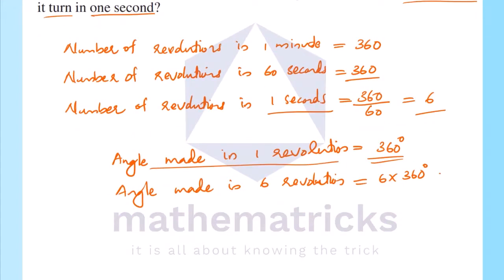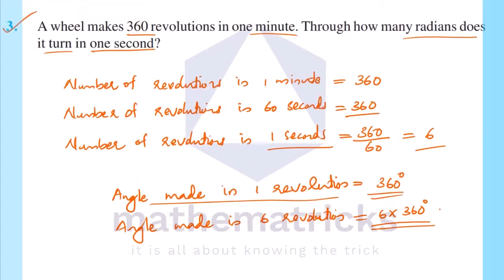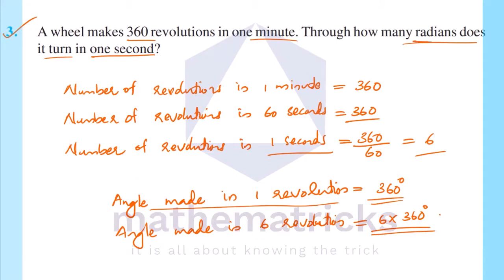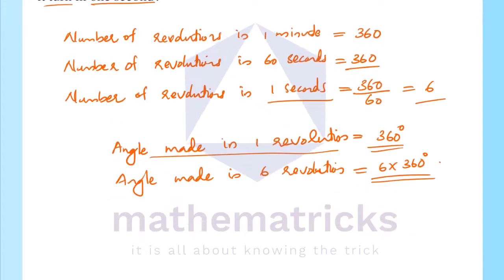We have to express this angle in radians. To convert it to radians, we use the relation: 1 degree equals π/180 radian.